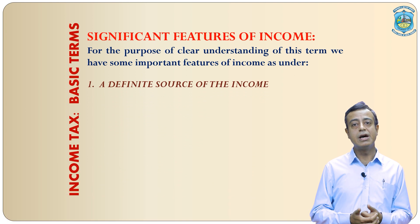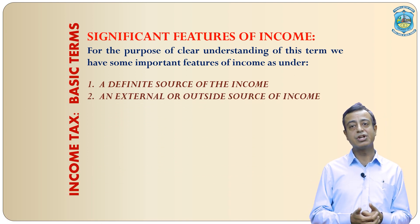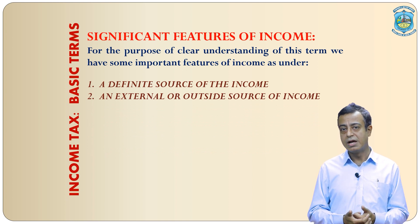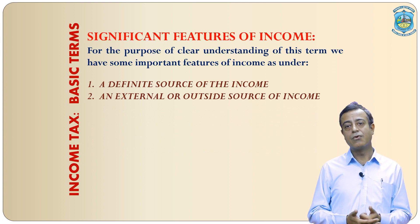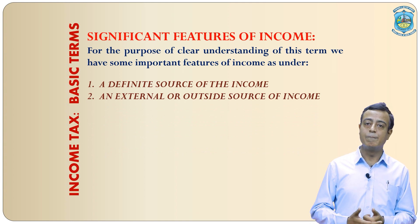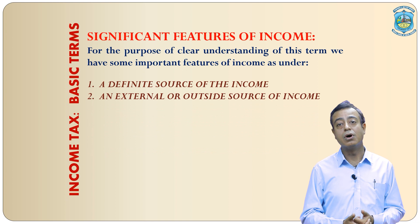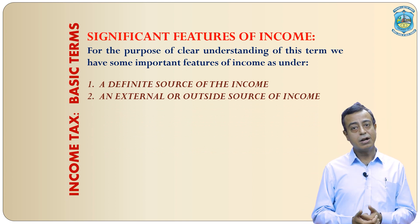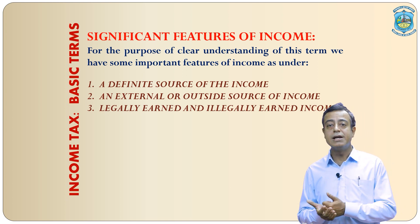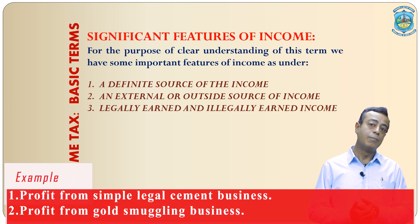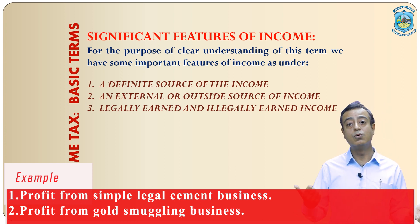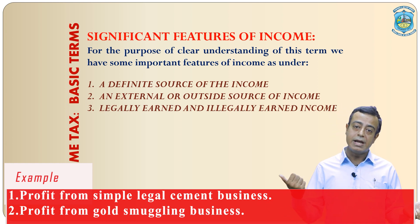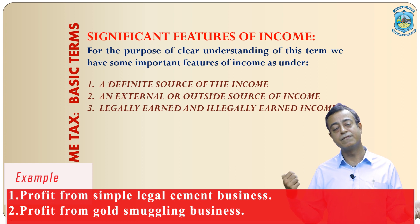Second point: there should be a particular external or outsider source of income. For example, salary received by an employee from any company, rent received by the landlord from a tenant — in this case, the company is an outsider and the tenant is also an outsider person. Third point: income can be legally earned or illegally earned — both are taxable. For example, profit from a simple legal cement business is taxable, and profit from gold smuggling business is also taxable. However, gold smuggling is a punishable crime, but in income tax act both types of incomes are definitely taxable.